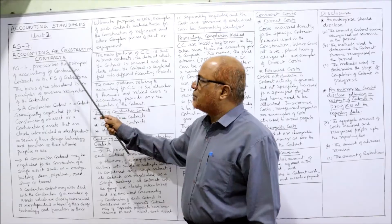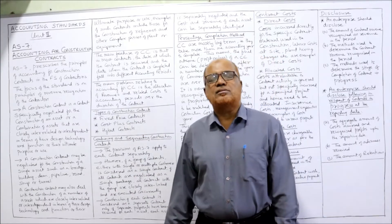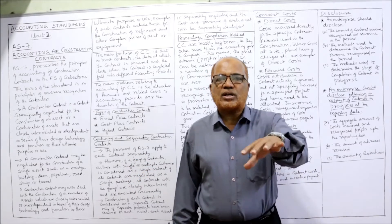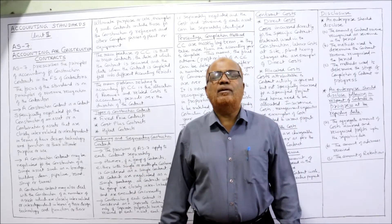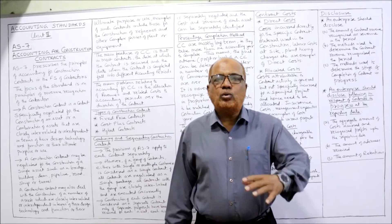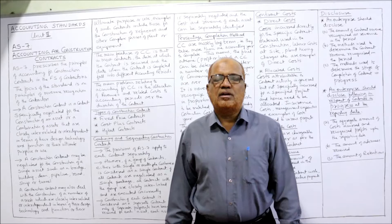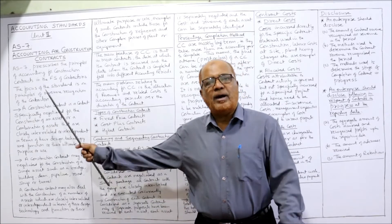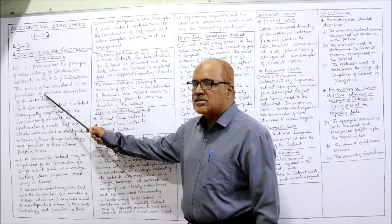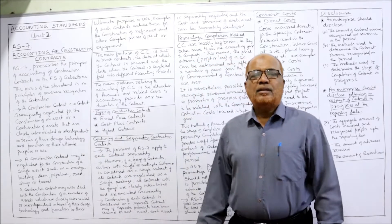AS 7 prescribes the principles of accounting for construction contracts in the financial statements of contractors. Just like every other business, contractors prepare financial statements, and this standard explains how to disclose items of construction business in those statements. The focus is on the principles of revenue recognition for contractors.